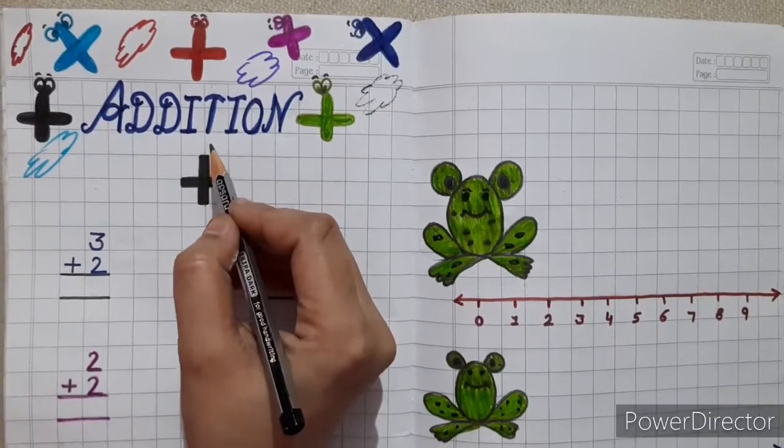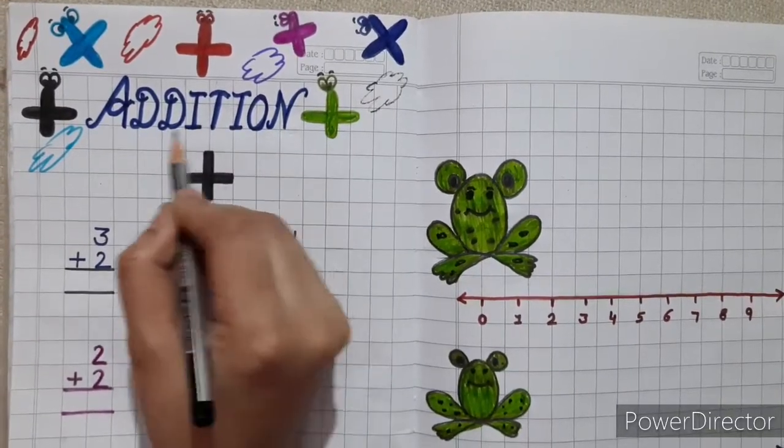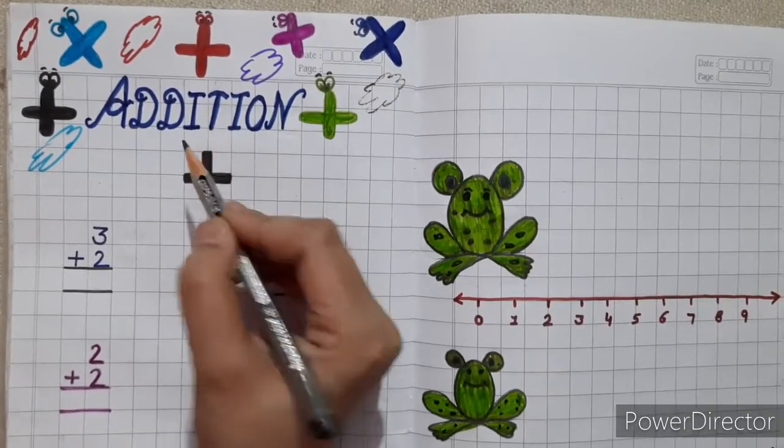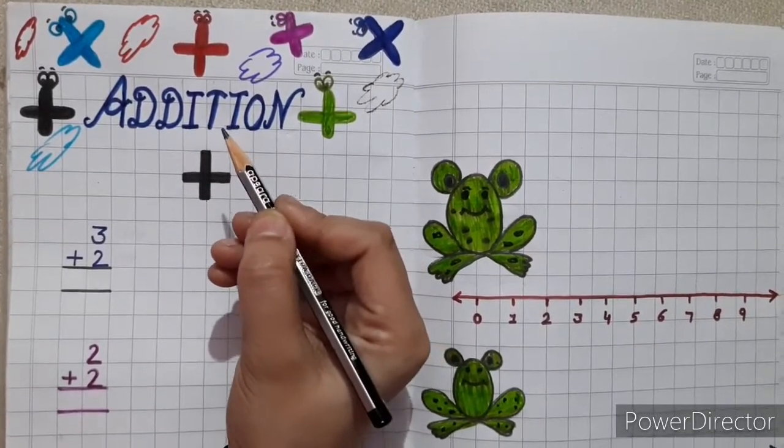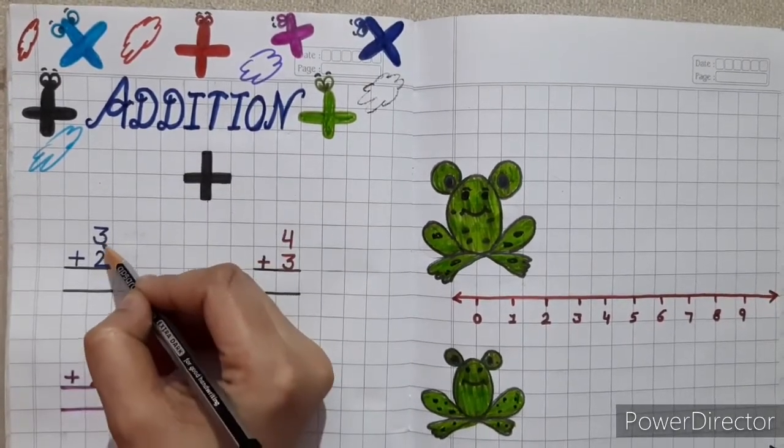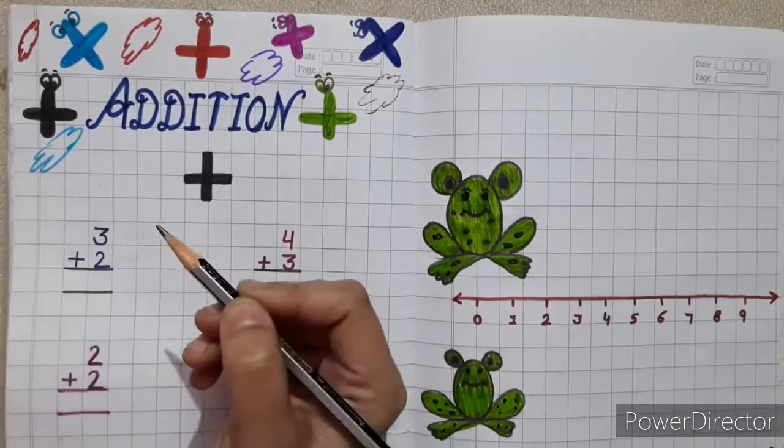Kids, today we will do addition. Addition means taking two or more numbers and adding them together. Bacho, addition ka matlab hotta hai, do ya do se zayadha numbers ko jodna.